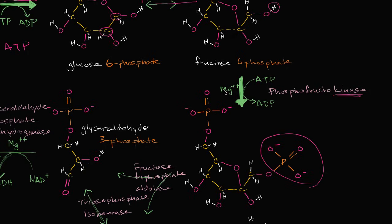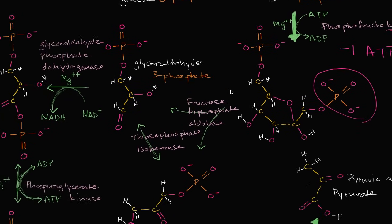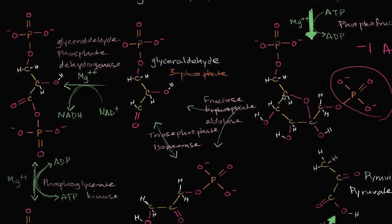And once again, it's facilitated by the magnesium cofactor. It helps stabilize some of the negative charge associated with the phosphate groups. We talk about that in other videos. But the important thing is it uses another ATP. We're still in the investment phase. Negative one, negative one ATP.